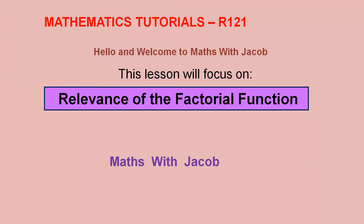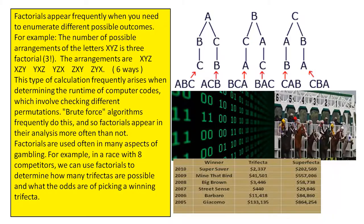Hello, and welcome to Maths with Jacob. This lesson will focus on the relevance of the factorial function. Factorials appear frequently when you need to enumerate different possible outcomes. For example, the number of possible arrangements of the letters x, y, z is 3 factorial.